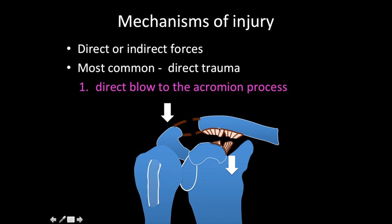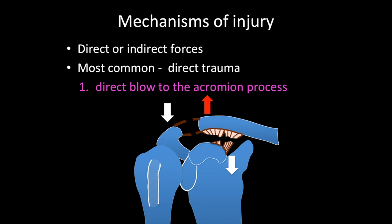Once both ligament groups are torn, the lateral end of the clavicle is free to dislocate. Normally the clavicle is oriented slightly superiorly from medial to lateral, meaning the lateral end is slightly superior — because of this orientation the clavicle often tends to dislocate superiorly. Indirect forces such as a fall on the shoulder produce the same mechanism: a downward force acts on the acromion and scapula.